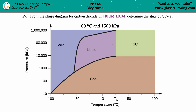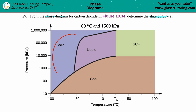Number 57: from the phase diagram for carbon dioxide, which is figure 10.34, we need to determine the state of carbon dioxide (CO₂) at negative 80 degrees Celsius and 1500 kilopascals.